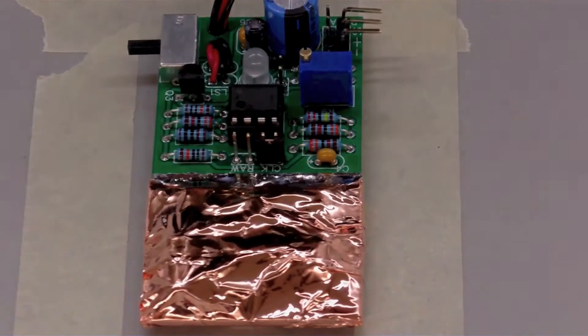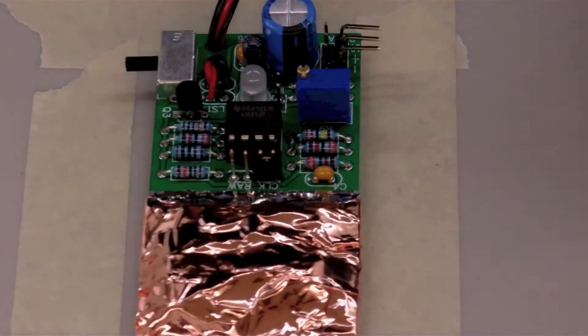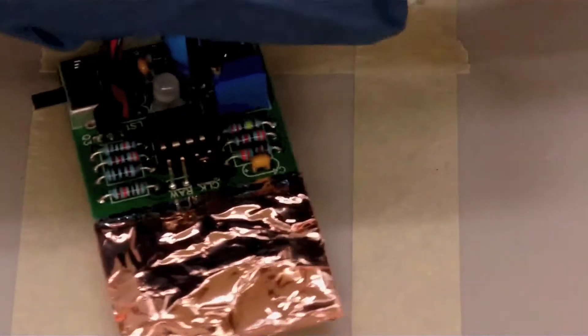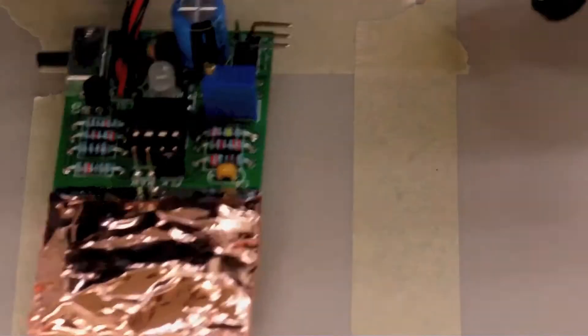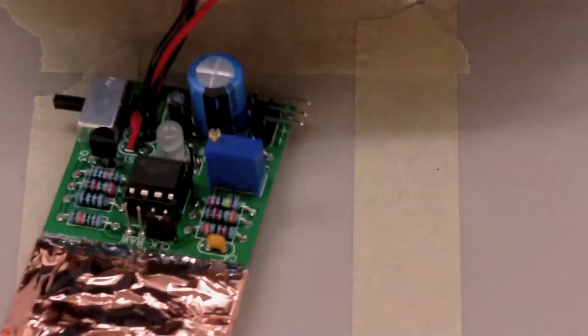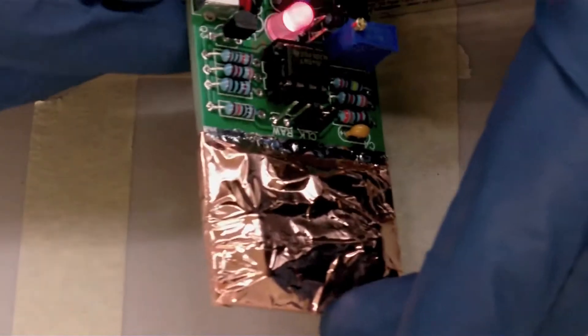All righty folks. So we should have a working detector now. So let's find out. We'll hook up our 9-volt battery. Make sure they connect to the opposite connections, right? Big, small, small, big. Okay. We connect it.